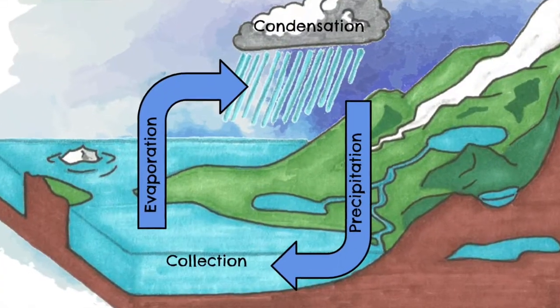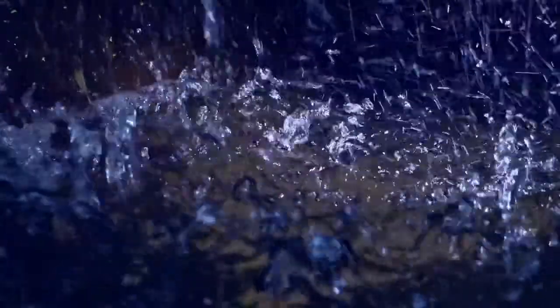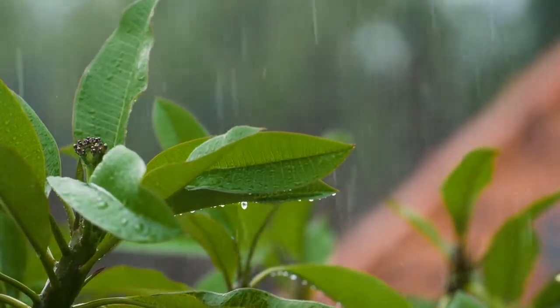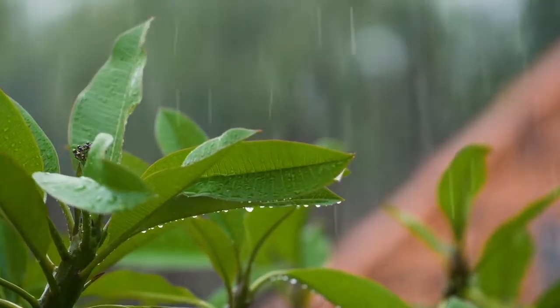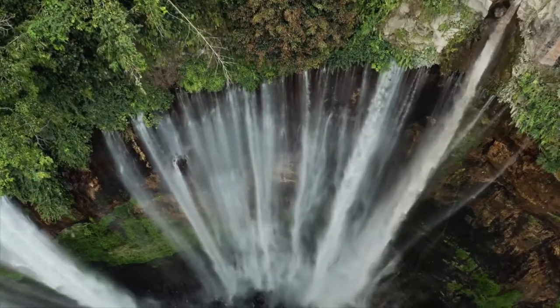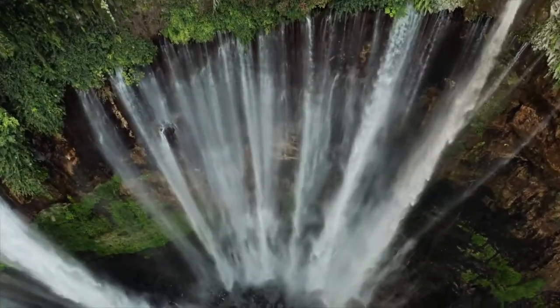The final stage of the water cycle is called collection. When the heavy water droplets fall back to Earth's surface as precipitation, they land in rivers, lakes, and oceans. Some water is soaked into the ground and absorbed by plant roots. Eventually, this water will be evaporated back into the atmosphere and the cycle will continue.